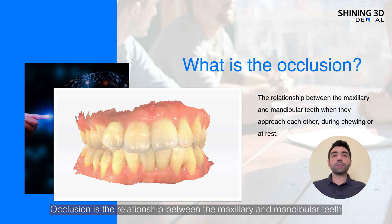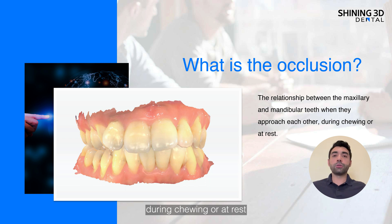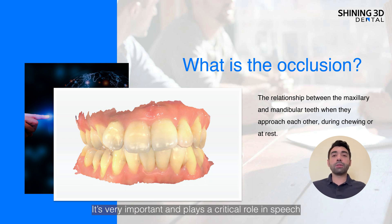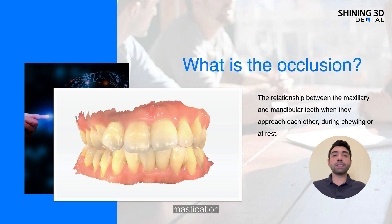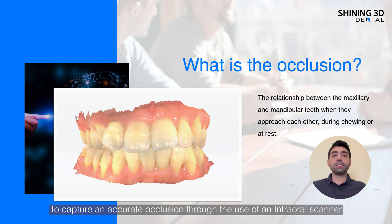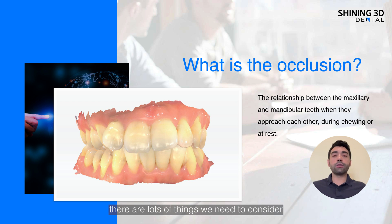Occlusion is a relationship between the maxillary and mandibular teeth when they approach each other, during chewing or at rest. It is very important and it plays a critical role in speech, mastication, breathing, and skeletal alignment. To capture an accurate occlusion through the use of an intraoral scanner, there's a bunch of things that we need to consider.